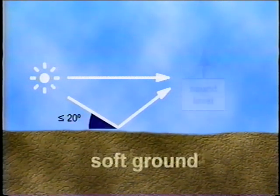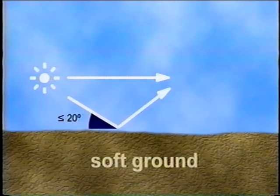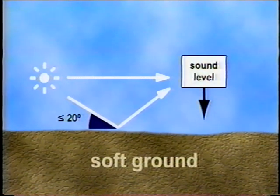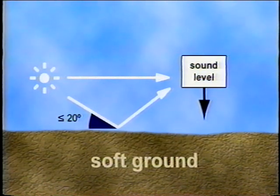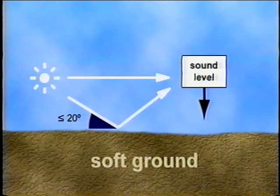An acoustically soft ground, such as grassland, plowed earth, or snow, can cause a significant broadband attenuation, except at low frequencies. As a general rule of thumb, for each doubling of distance, the soft ground effect attenuates the sound pressure level at the receiver by 1.5 dB. This extra attenuation applies only to incident angles of 20 degrees or less. For greater angles, the ground becomes a good reflector and can be considered acoustically hard.